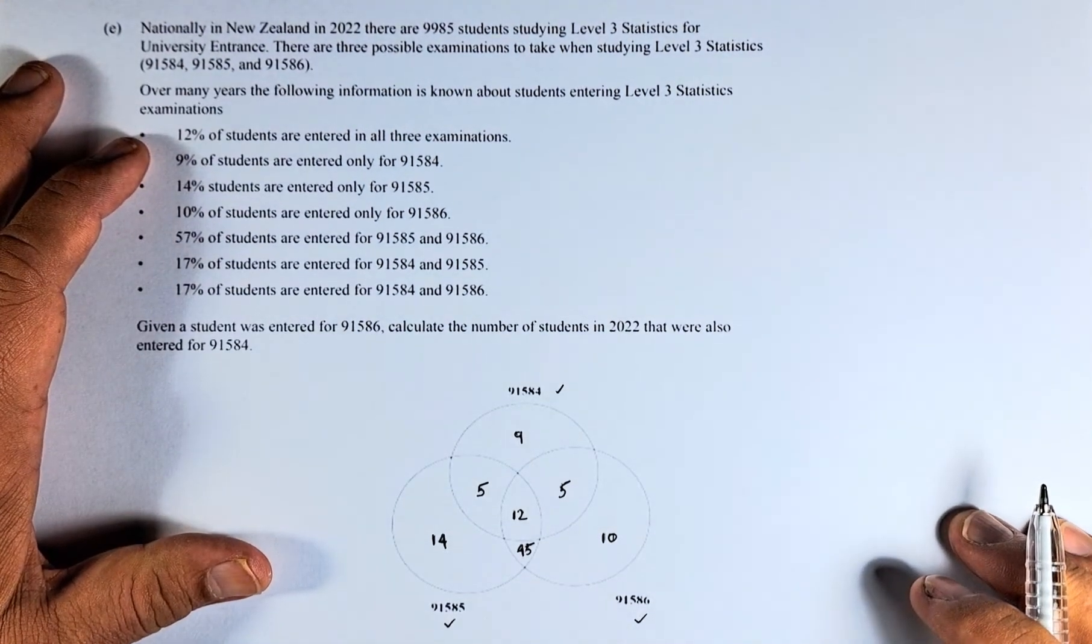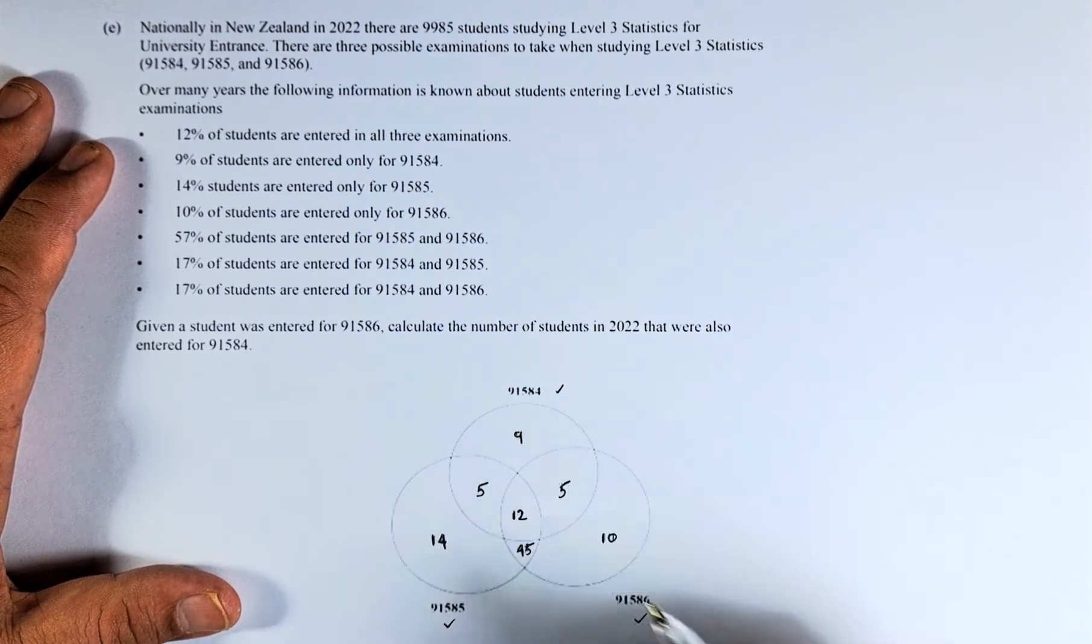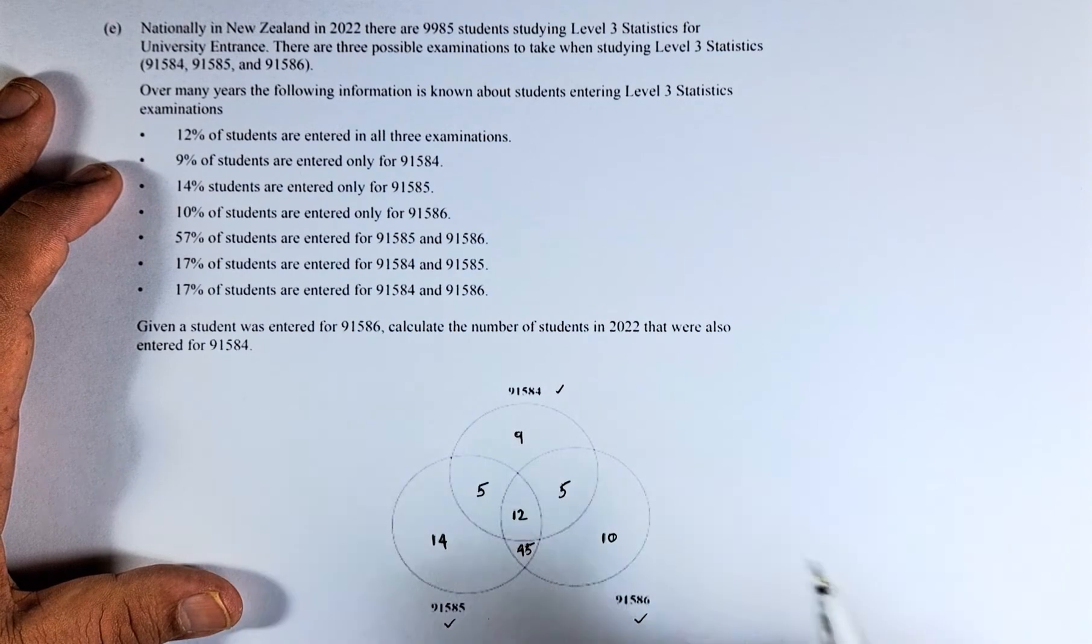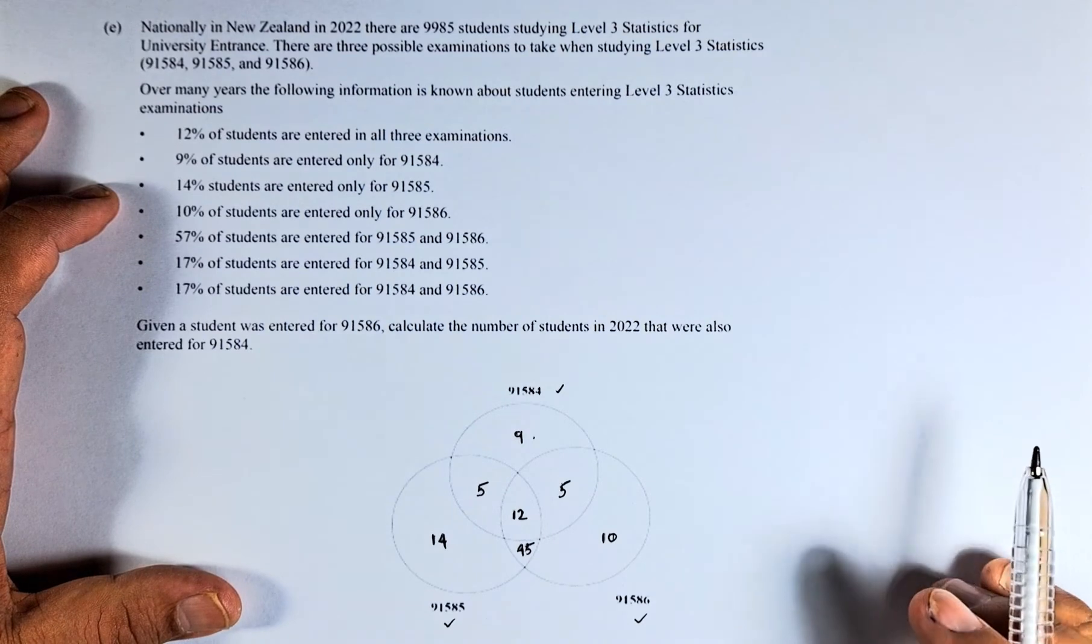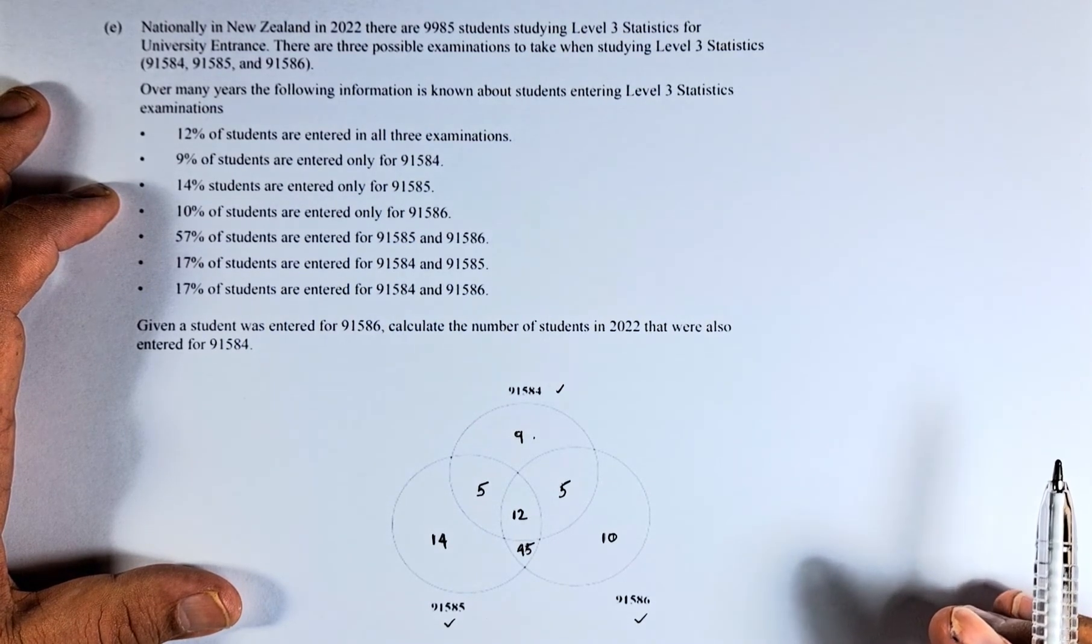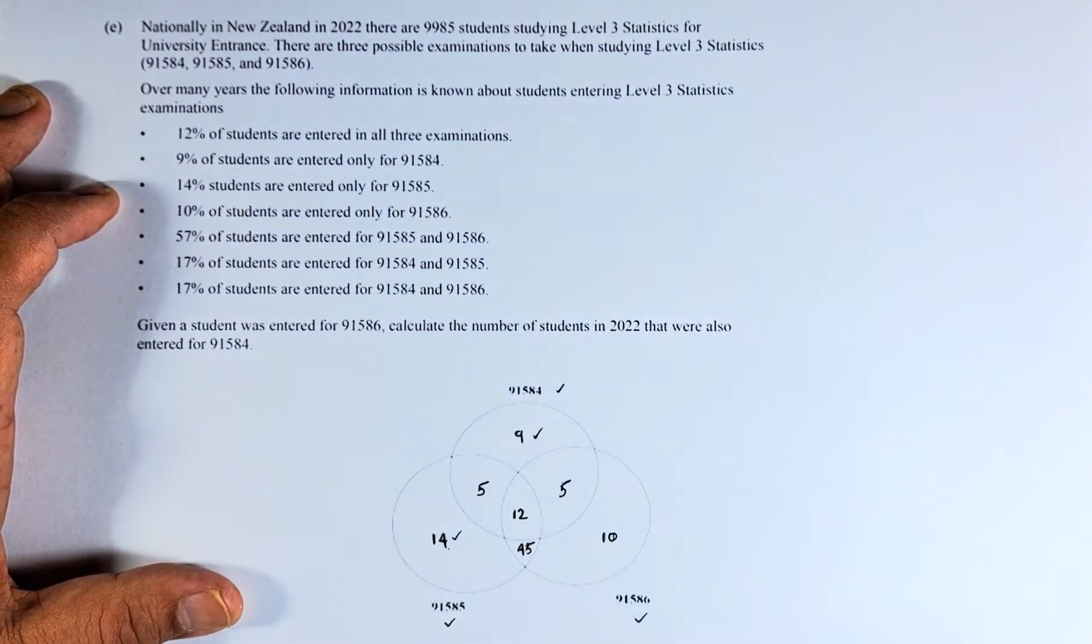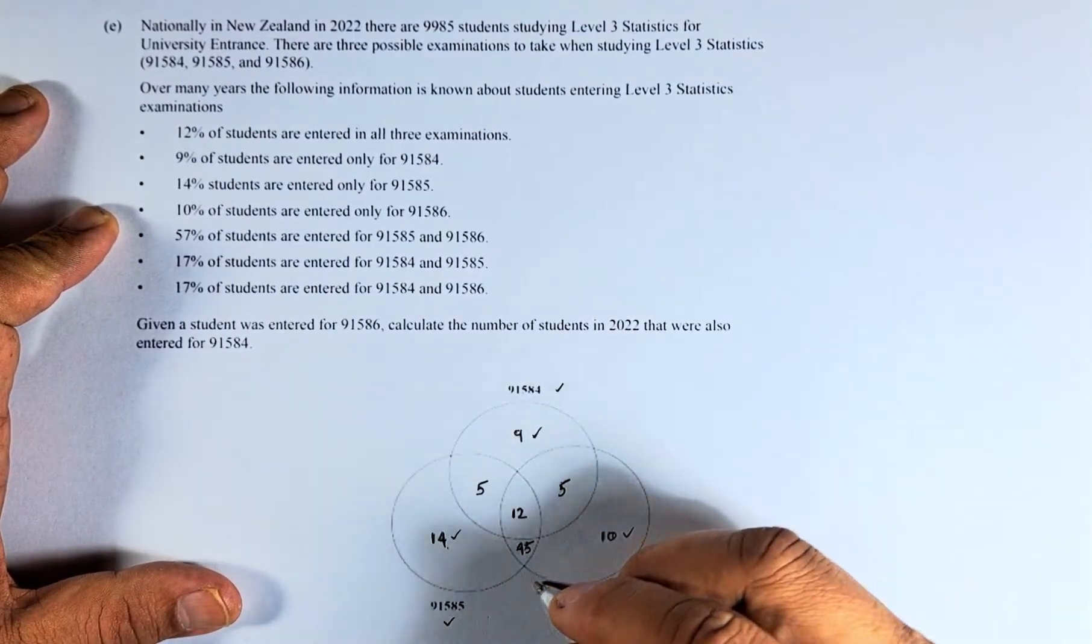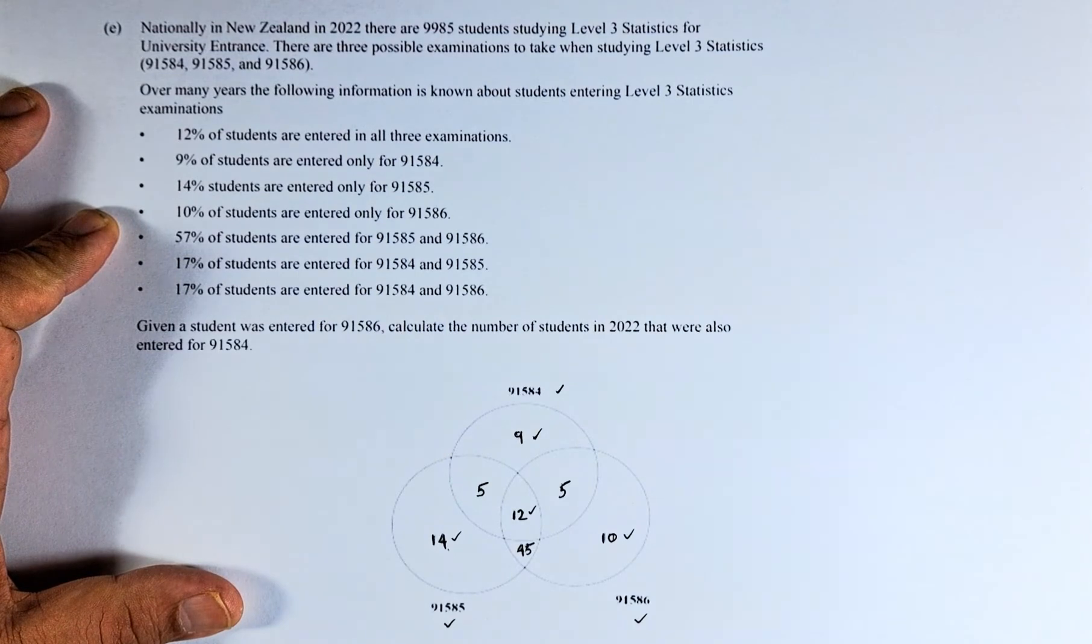12% of the students entered all 3 examinations. So 12% in the middle here covers all 3 examinations. 9% are entered only at 91584, only 91584 is 9%. 14% are entered only for 91585, so 14% is here. And then 10%, only 91586, only means only this part here. So we have 4 given numbers and we have entered them in the Venn diagram.